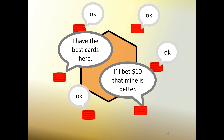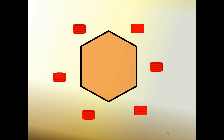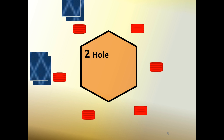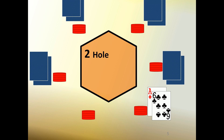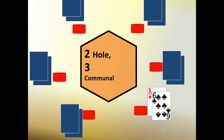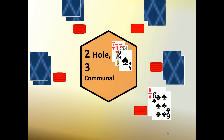Texas Hold'em deepens this strategy by slowly revealing a set of shared community cards in the center of the table as the round progresses. To start, we're dealt two cards privately — and we've got an ace and a six. Bets are made forcing players to stay in contention or leave the round, abandoning the money that they put into the pot. Three communal cards are placed face up on the table — these cards are called the flop — which is great for us because now we have a pair of aces. A betting round ensues, some players drop out, one more communal card is dealt: this is the turn. And we have even more reason to be excited because now we have three aces.